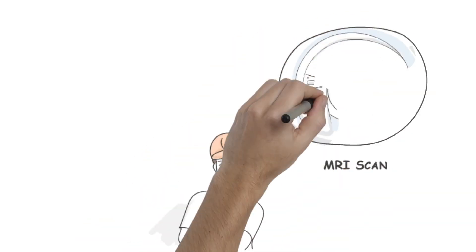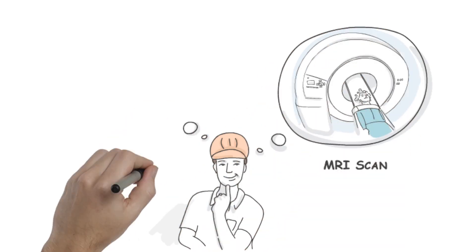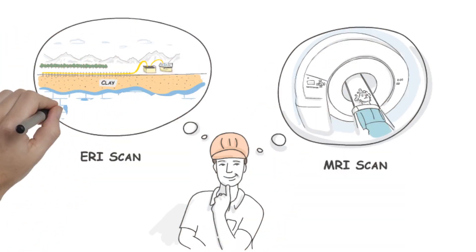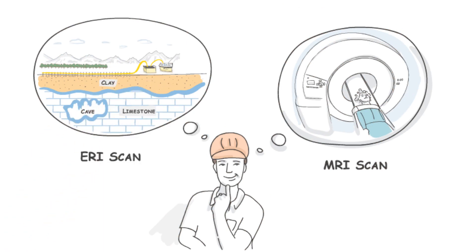He wants something that works like the MRI doctors used when looking for a sprain in his knee. With Electrical Resistivity Imaging, also known as ERI, he can.